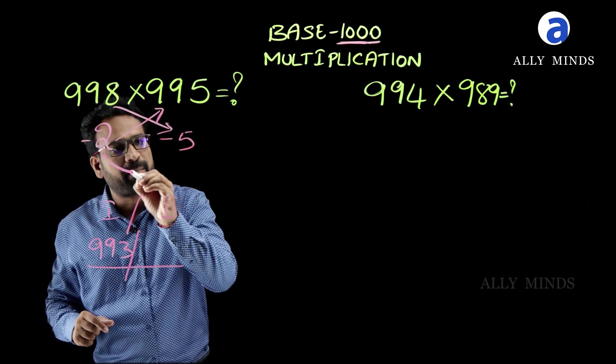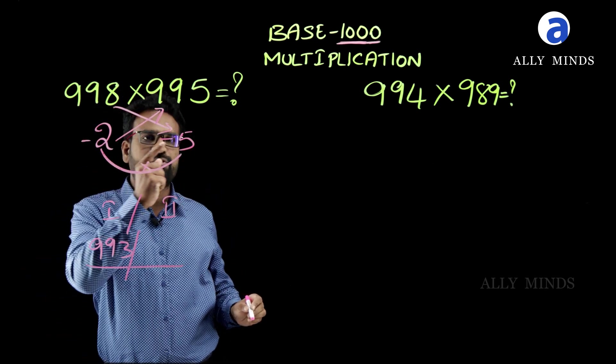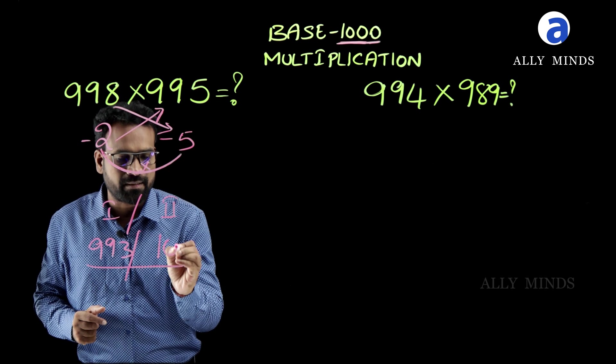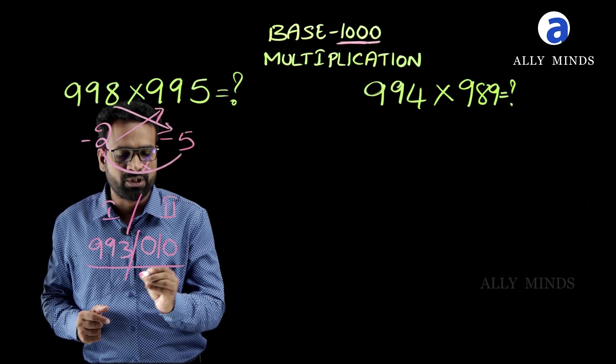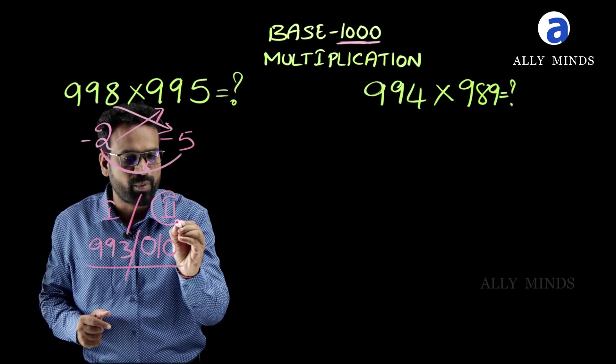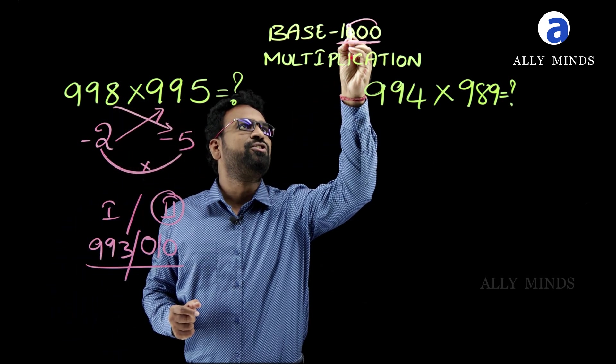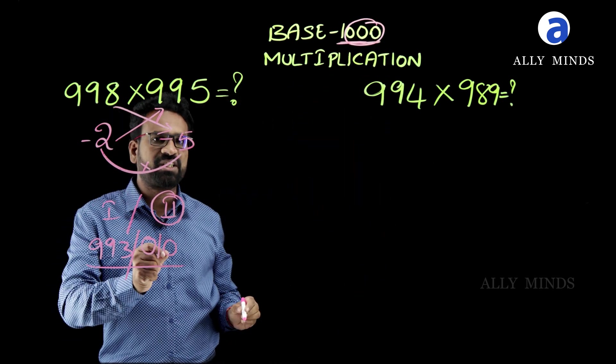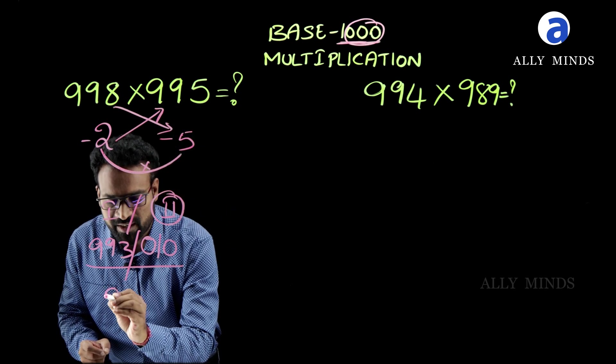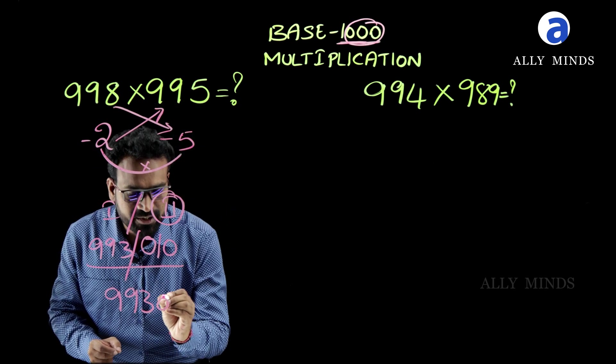And for the second part, just multiply these two numbers. What is minus 2 times minus 5? It is plus 10, but we should write it as 010. Why? Because in the second part, there should be a triple digit number. Here, we have three zeros in the base, so there should be a triple digit number in the second part. So our final answer is 993,010.